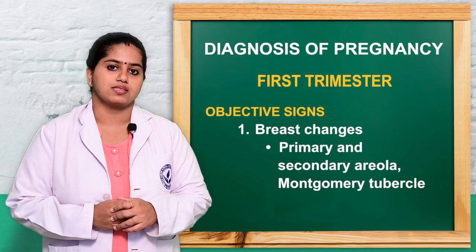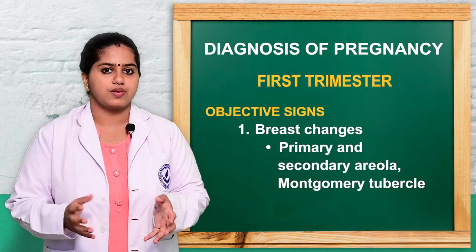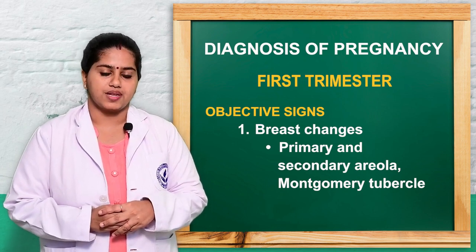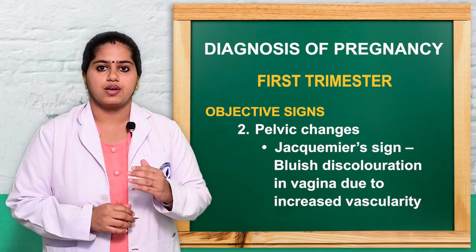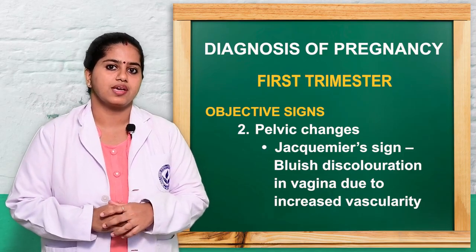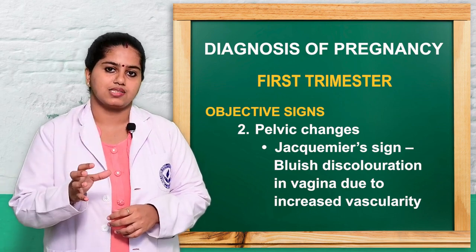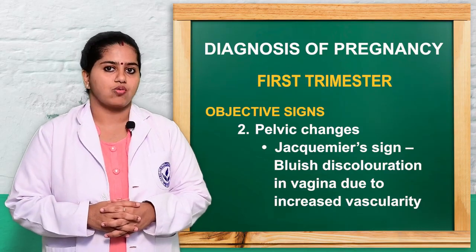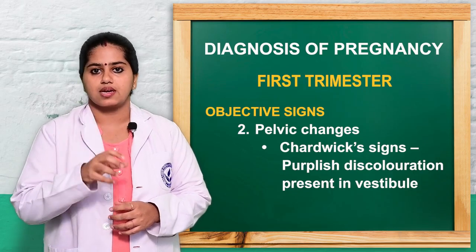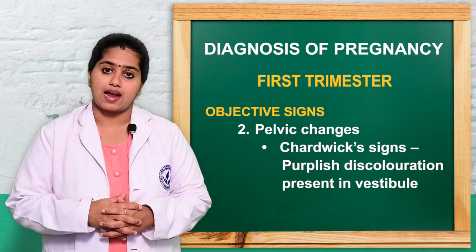The objective signs in the first trimester include breast changes: the size of the breast increases, the primary areola becomes more prominent, and Montgomery's tubercles are present. Regarding pelvic changes, because of increased vascularity there are vaginal changes. A bluish discoloration of the vaginal mucosa is known as Jacquemier's sign. A bluish or purplish discoloration of the vestibule, clitoris, vagina, or cervix is known as Chadwick's sign.